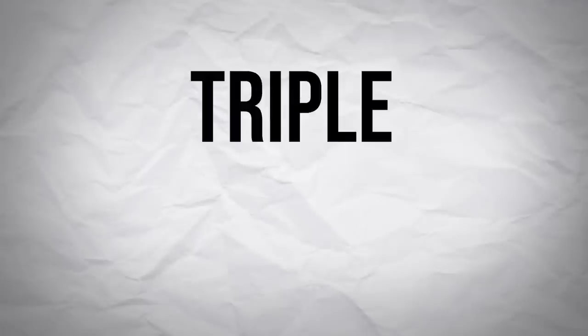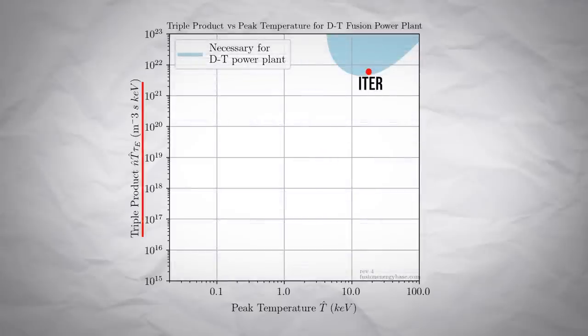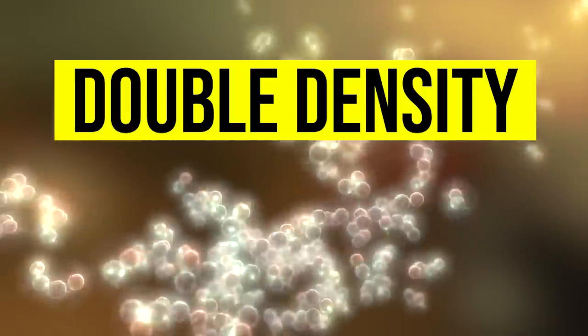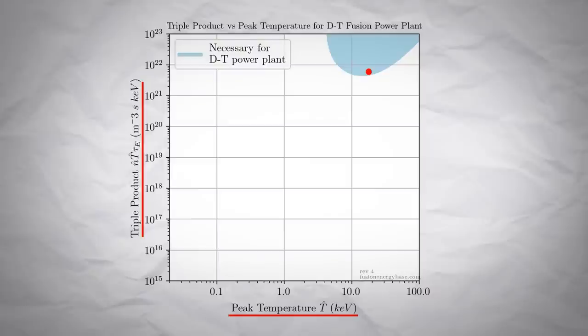If we look back to the triple product, we can plot a useful graph for comparison. In this case, the y-axis is the triple product, and the x-axis is our temperature. With double the ion density, the ITER project could have double the triple product. This causes the red dot to shift from here to here.